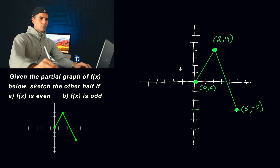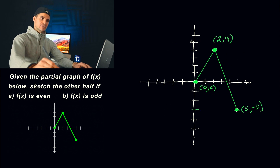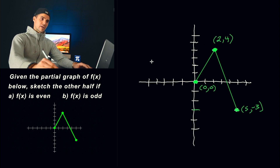Now moving on to part B, where we have to draw the other half of the graph when the function is odd. Remember, when a function is odd it has point symmetry, which means it's reflected in both the y-axis and the x-axis. An even function you only reflect over the y-axis; an odd function you have to reflect over both axes. You can reflect over the x first and then the y, or vice versa — you'll still end up with the other half.